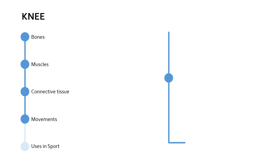There are also lateral and medial rotation movements at the knee, though only when the knee is flexed. The lower leg can turn the foot inwards towards the midline, which is medial rotation, or outwards away from the midline, which is lateral rotation. Lateral rotation is produced by the biceps femoris, while medial rotation is produced by a group of muscles: semimembranosus, semitendinosus, gracilis, sartorius, and popliteus.